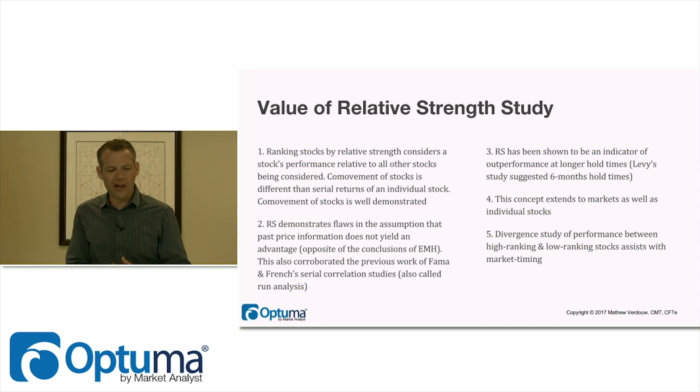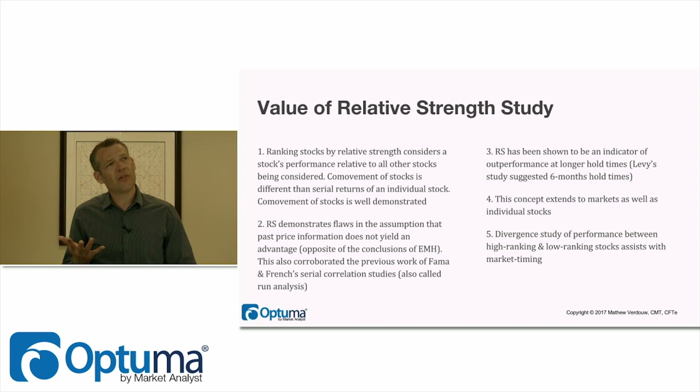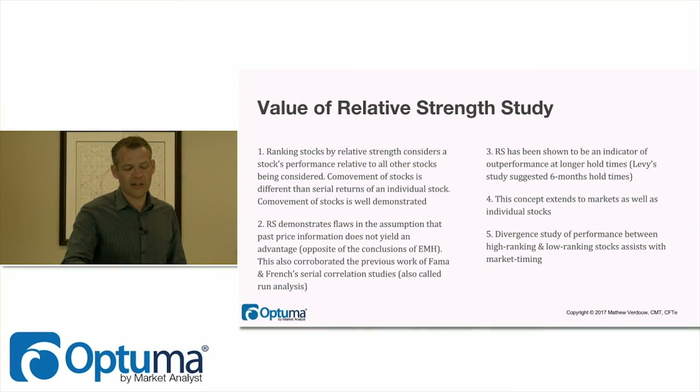Divergence — the study of performance between high-ranking and low-ranking stocks — also assists with timing. We can look at the high-ranking stocks in their relative strength versus the low-ranking ones. Similar to breadth and advance-decline analysis, where large cap stocks might continue going up while small caps start to fall, we can do that divergence purely on relative strength: take the top 10% and the bottom 10% of our universe, plot what they're doing, and when we start seeing divergences between those two groups, that can help with market timing.